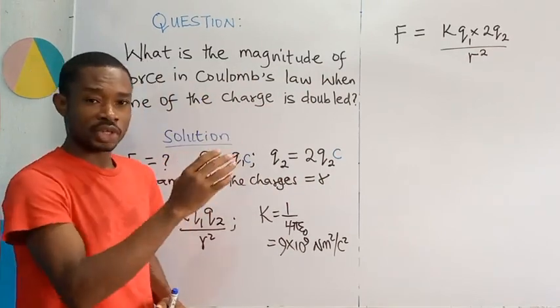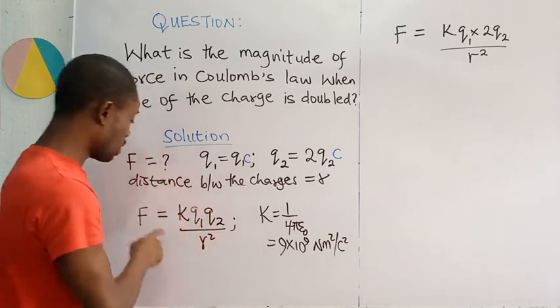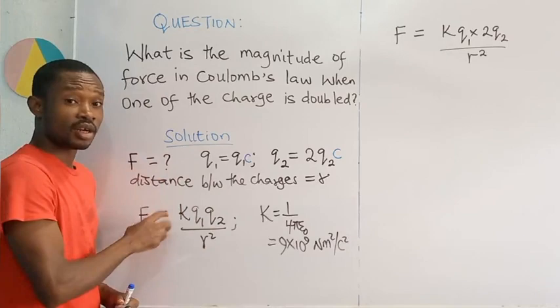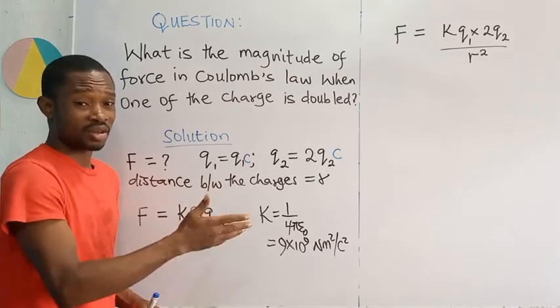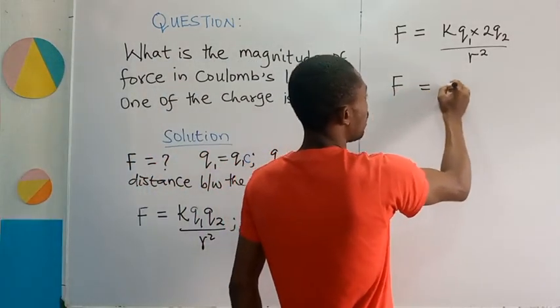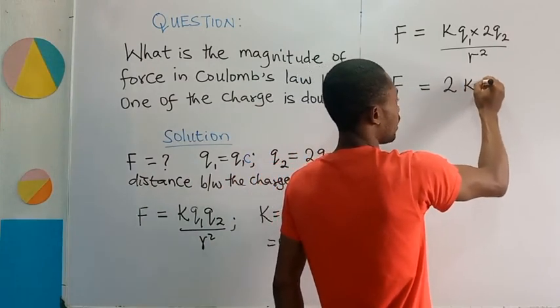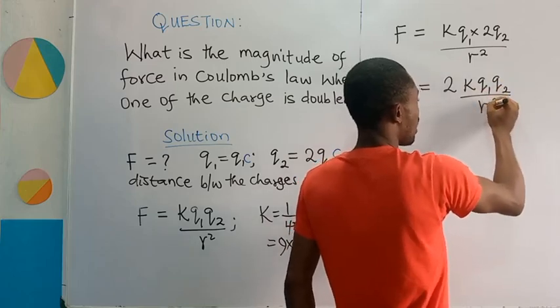We're going to simplify this term and then see what we would get. This particular formula you are seeing here is the Coulomb's force. And so, moving on, that's the magnitude of the force according to Coulomb's law. Moving on, if I work this further, I am going to get 2 times K Q1 Q2 divided by R squared.